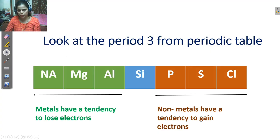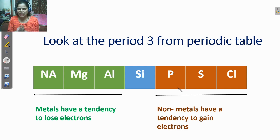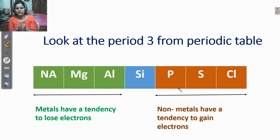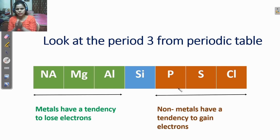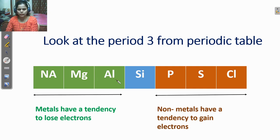Look at period number 3 from a modern periodic table. As I explained in our previous lecture, a zigzag line that is situated on the P block separates the metals and the non-metals. The metals are situated at the left hand side and the non-metals are situated at the right hand side of the zigzag line, and metalloids are situated on the zigzag line. Here, sodium, magnesium, and aluminum — these are the metals.